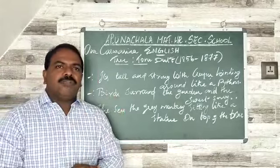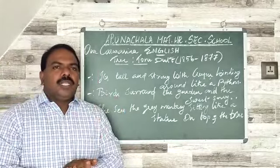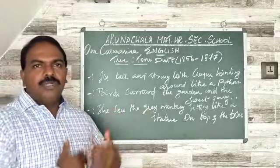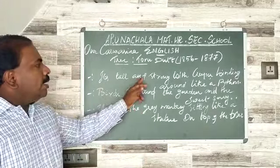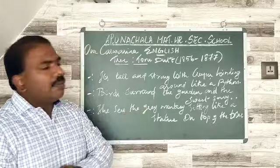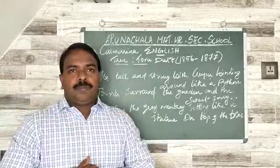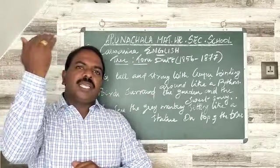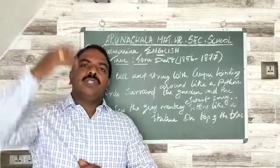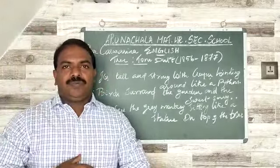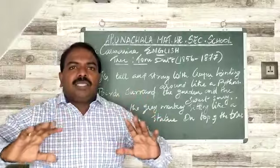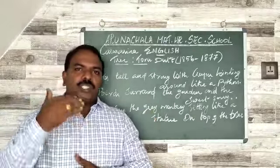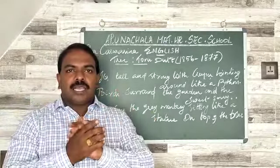In the first stanza, the tree is described as tall and strong, with a creeper winding around it like a python. The tree looks like a python because of the creeper surrounding it. We can also see flowers — the tree with the creeper and flowers looks like a python.